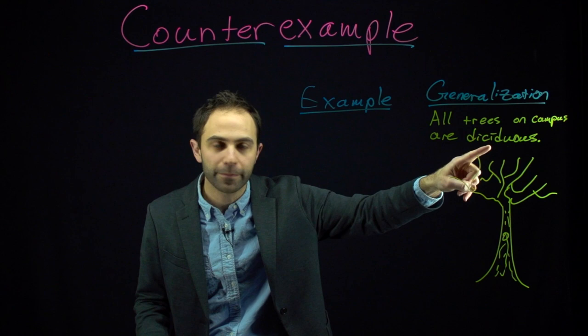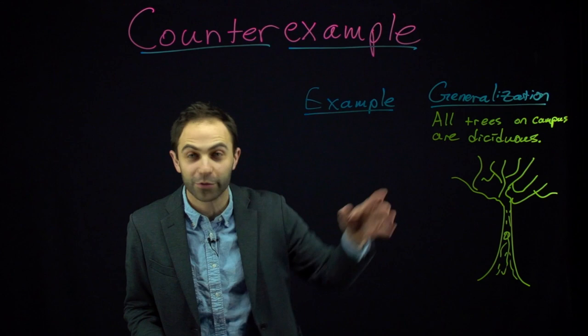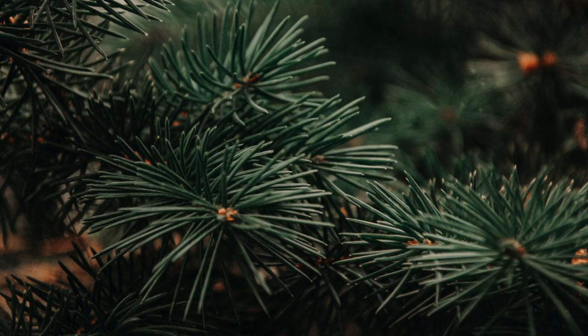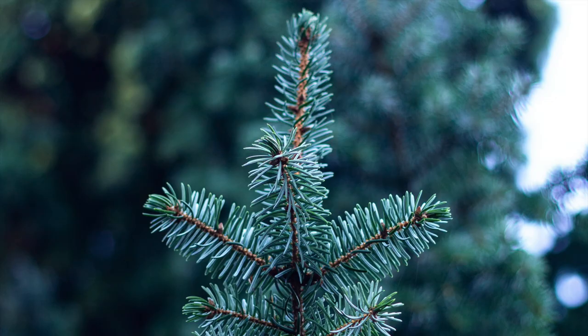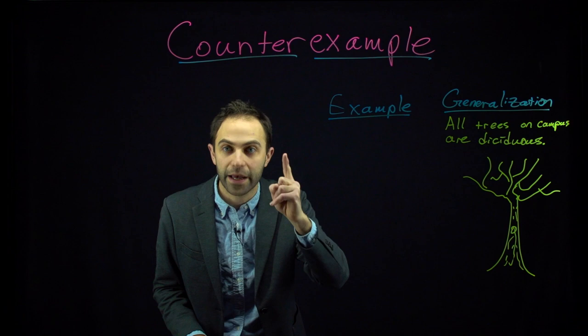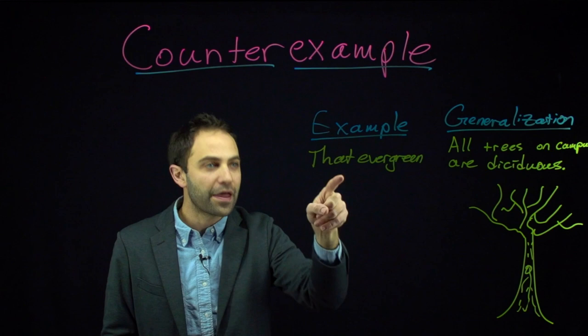What if you wanted to disprove this claim? If all of the trees really are deciduous, you can't disprove it. But if it's false, all that you would need to disprove this claim is one example — one tree that's not the kind of tree that loses its leaves, like an evergreen tree that has needles instead of leaves. If you walked around campus and found one evergreen tree, that would be enough to prove that this statement is false. And this tree would be a counterexample — a single example that goes counter to the generalization and thereby proves it false.